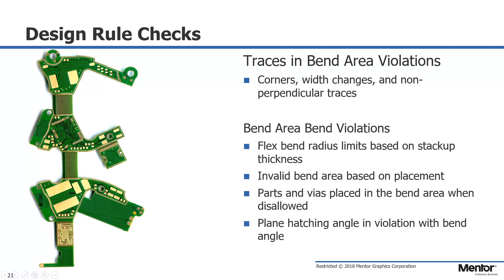For example: traces that corner in a bend area, width changes, non-perpendicular traces in relation to the bend region, bend area-specific violations such as flex bend radius limits based on the stack-up thickness, invalid bend area placement such as covering a rigid section, parts and vias placed in the bend area when disallowed, and plane hatching angle in violation with the bend angle.